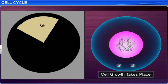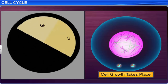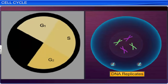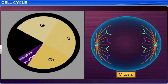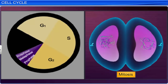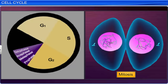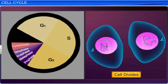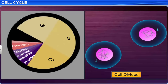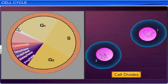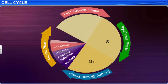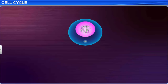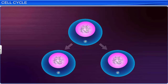During this process, cell growth takes place, followed by DNA replication and cell division. However, the process must take place in a coordinated manner, so that each cell divides correctly and the genomes in the progeny cells remain intact.